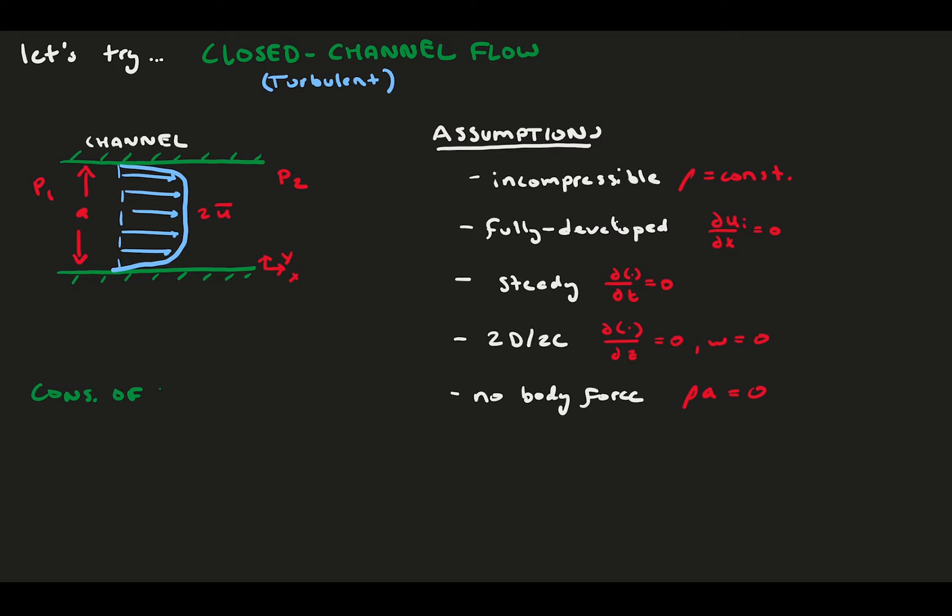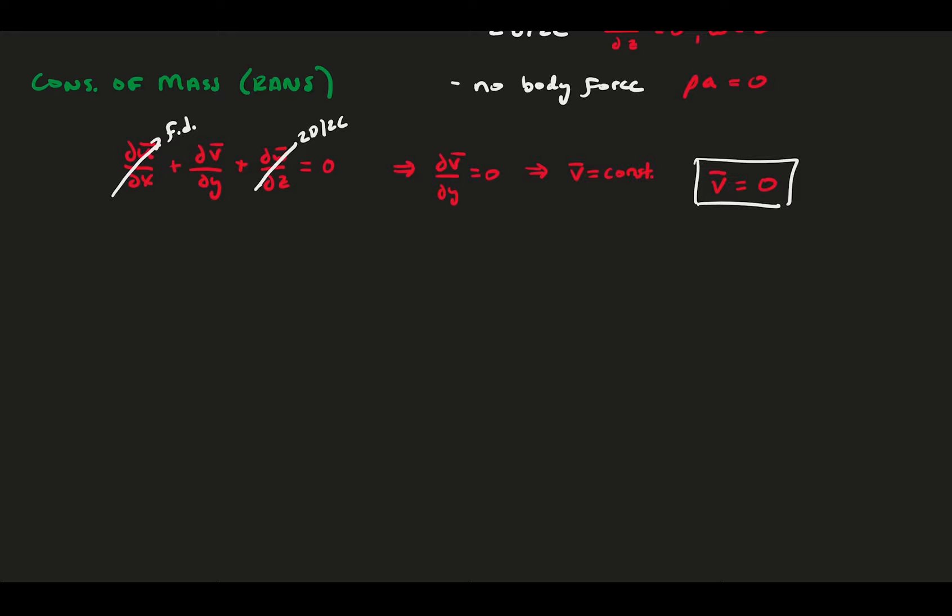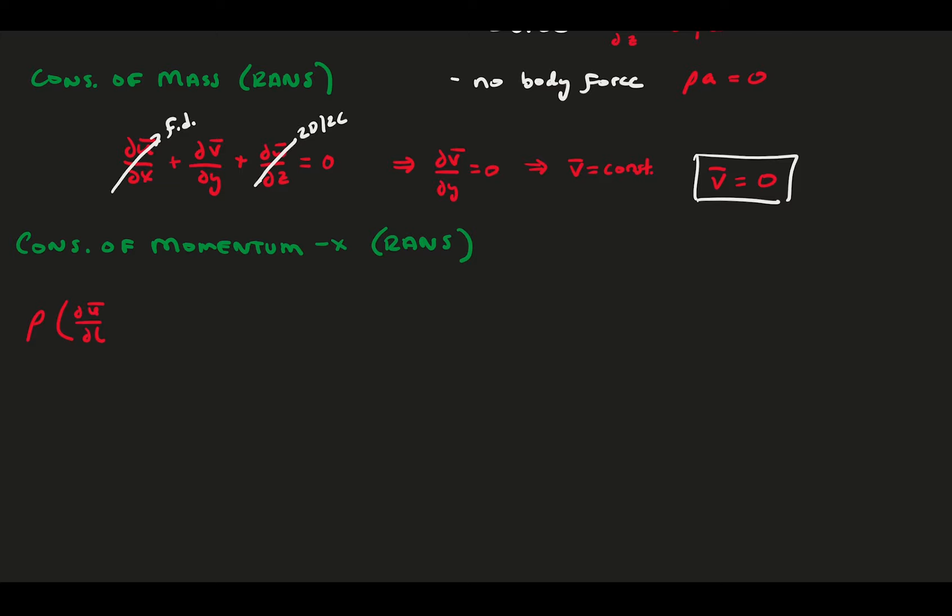Two terms go away because of our assumptions. Integrating, we find that V-bar must be a constant, and since our boundary conditions define V-bar to be zero at some point, we know V-bar is zero everywhere. This is the same procedure as with laminar channel flow. Alright, next up we have the conservation of momentum in the x-direction. Write out the complete RANS equation for it.